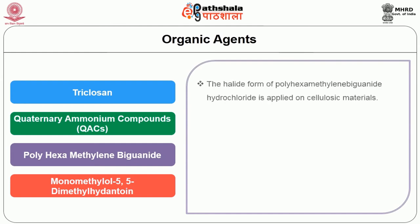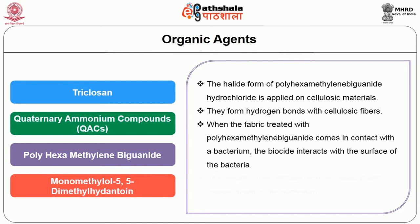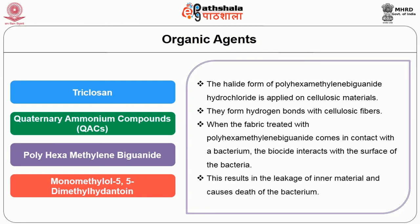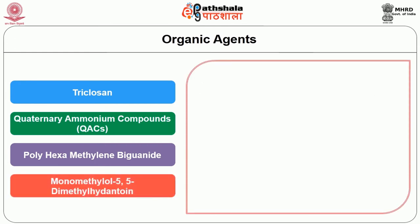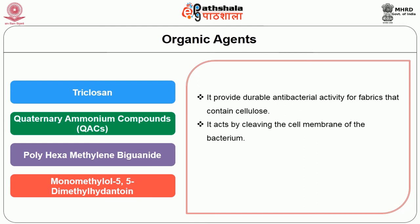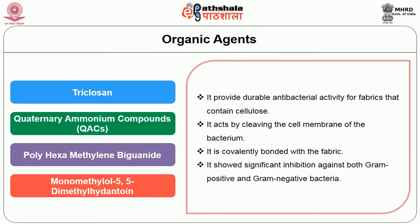Polyhexamethylene biguanide hydrochloride is applied on cellulosic materials and forms hydrogen bonds with cellulosic fibers. When fabric treated with polyhexamethylene biguanide comes into contact with bacterium, the biocide interacts with the surface of the bacteria, resulting in leakage of inner material and death of the bacterium. Monomethylol 5,5-dimethyl hydantoin provides durable antibacterial activity for fabrics that contain cellulose. It acts by cleaving the cell membrane of the bacterium, is covalently bonded with the fabric, and shows significant inhibition against both gram-positive and gram-negative bacteria.